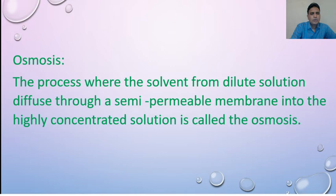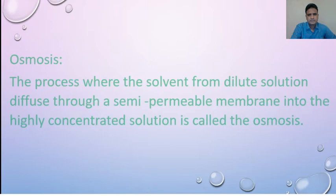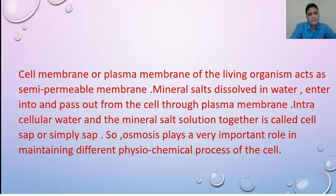Osmosis: the process where the solvent from a dilute solution diffuses through a semipermeable membrane into the highly concentrated solution is called osmosis. For osmosis, only the solvent can pass. If you make a solution with sugar and water, then only water can pass but not the solute.